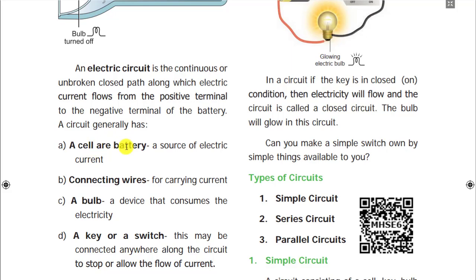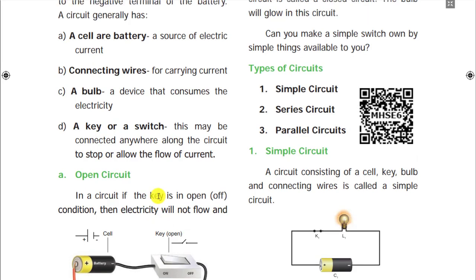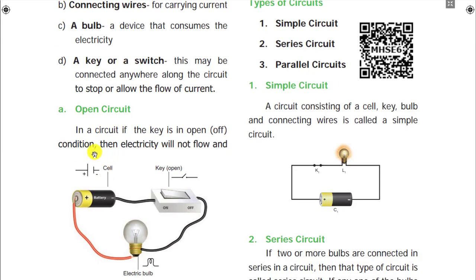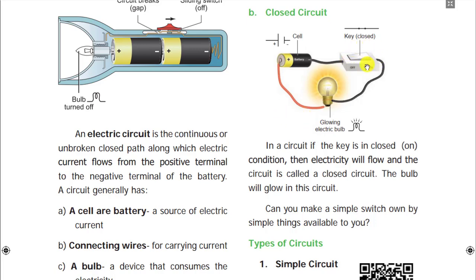For an electric circuit we need a cell or battery, connecting wires, a bulb, and a key. A key is nothing but a switch. The first type is an open circuit: the key is in the open position, so electricity will not flow. The battery is connected to the switch and then to the bulb, but when the key is open there is no contact, so the bulb will not glow. The second type is a closed circuit: when the key is closed, electricity flows and the bulb glows.